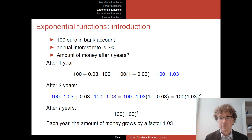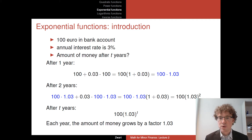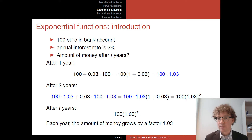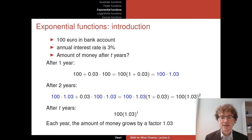Repeating this pattern, after t years in general we end up with our initial amount of 100 euros times 1.03 to the power t. Each year your amount of money grows by a factor of 1.03 — this is exponential growth.